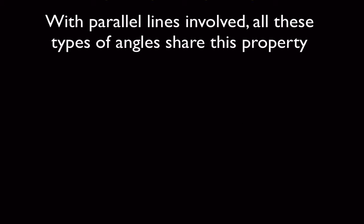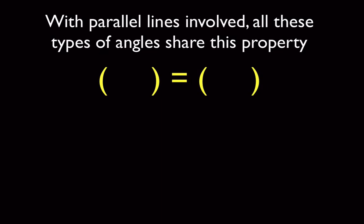Remember before we talked about how angles could either be equal to each other, add up to 90, or add up to 180. Well with this, all we really have is that they're equal to each other. And again, this only occurs with parallel lines.